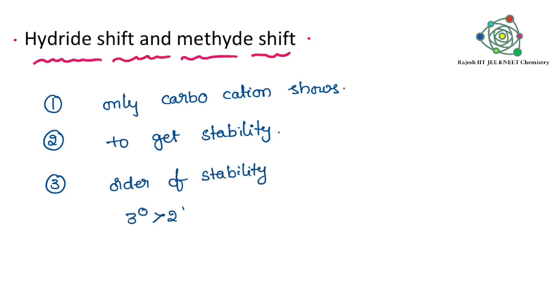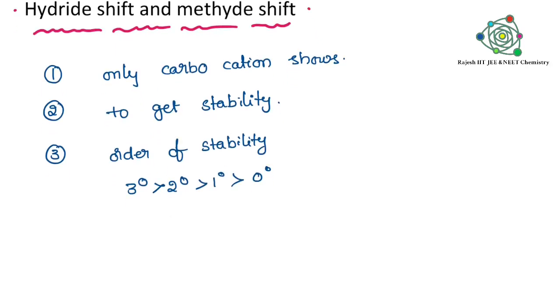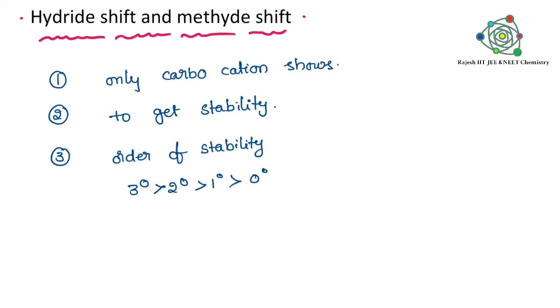You all know very well, third degree is greater than second degree, second degree is greater than first degree, first degree is greater than zero degree. So to get stability, this carbocation is involving in the shifting.